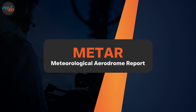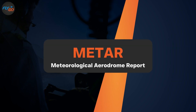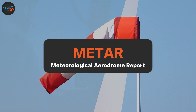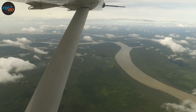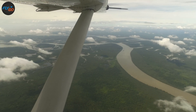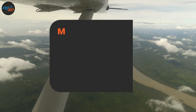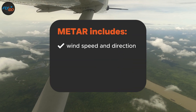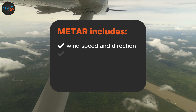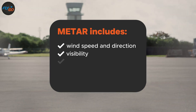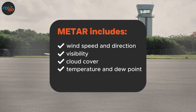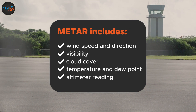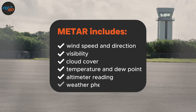The METAR, also known as Meteorological Aerodrome Report, gives an overview of the meteorological situation. A standard METAR includes essential details such as wind speed and direction, visibility, cloud cover, temperature and dew point, altimeter reading, and weather phenomena.